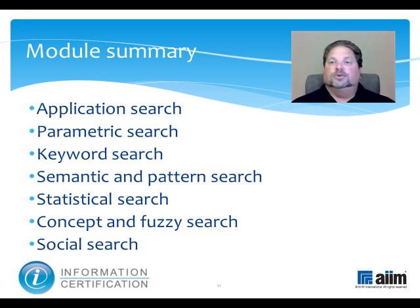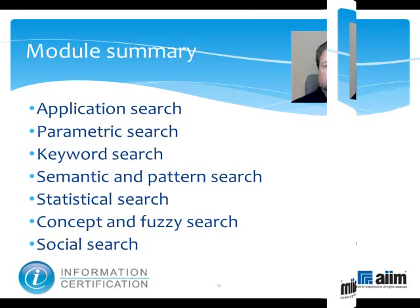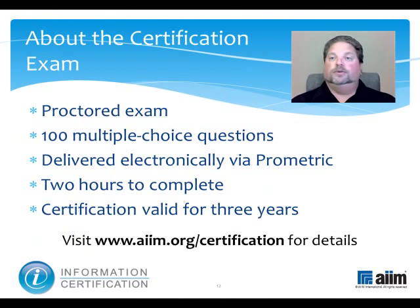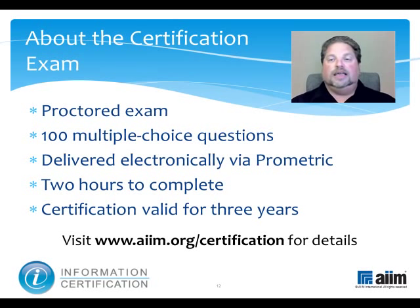This module has taken us on a tour of the seven major types of functional search: application, parametric, keyword, semantic and pattern, statistical, concept and fuzzy, and social. Next, you may wish to review the module on search engine optimization. The material you have just reviewed is part of a broader program of study that prepares you to take the information certification exam. This proctored test consists of 100 multiple-choice questions and is delivered electronically by Prometric. You'll have two hours to complete it, and upon passing, you'll earn a professional certification that's valid for three years. For more information, please visit www.aim.org/certification. Thank you.